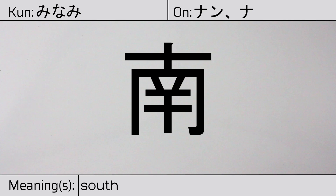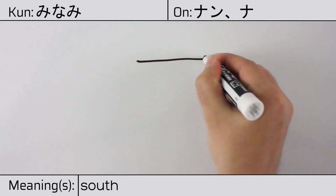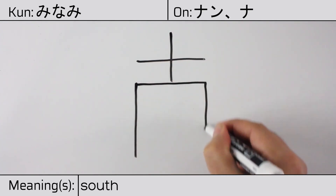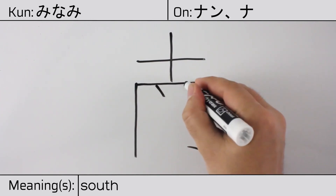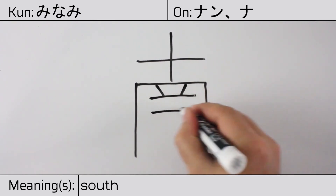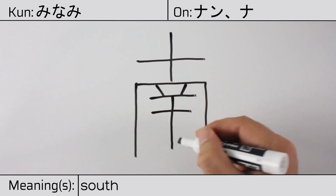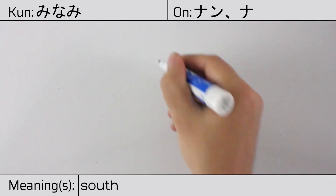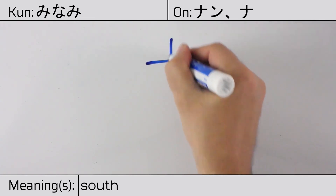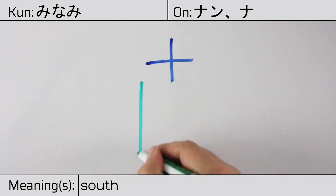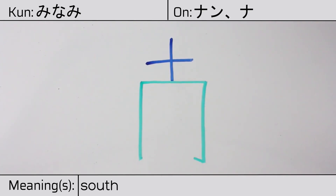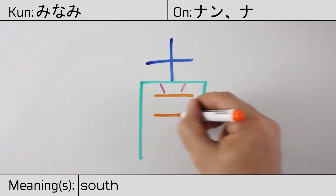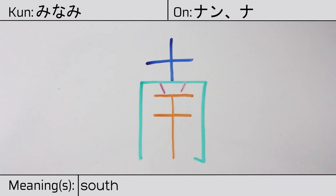Here is the stroke order. This character is made up of the following radicals or parts: ten, complete jiu at the top, the closure radical, chu ten in the middle, and finally kan, meaning to dry or shield.